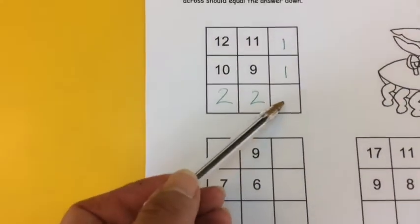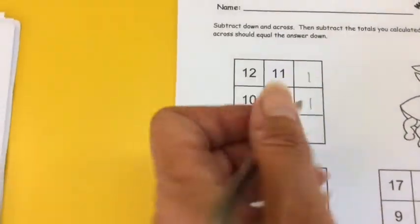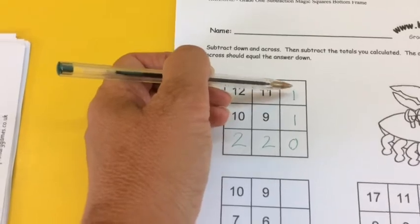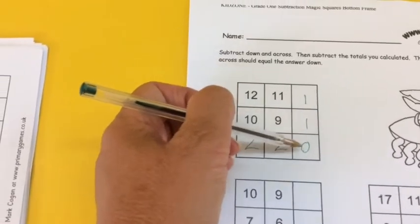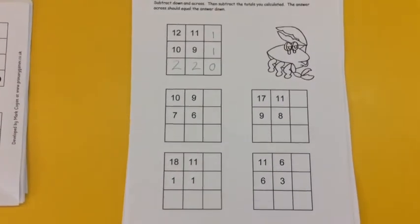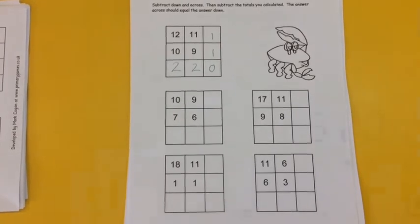But what about this square here? Well you have to work out 2 take away 2, which is 0, but would your column also give you that as well? 1 take away 1, is that also 0? Yeah. So we know we've got it right. See if you can work your way through the other squares, quickly but carefully, and don't forget to check.